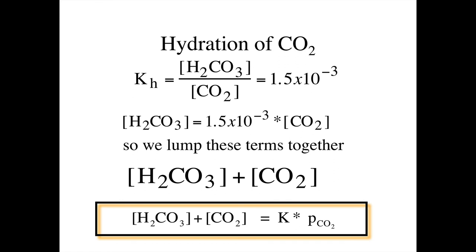CO2 undergoes a hydration reaction in water, where CO2 plus H2O forms carbonic acid. This constant is pH-independent, has a value of 1.5 times 10 to the minus 3. What that means is that carbonic acid is about 0.15% of the dissolved CO2. By convention, we don't talk about carbonic acid and CO2 as two separate species, but instead we lump these two together into one species, which are related through this constant, but not related to pH.